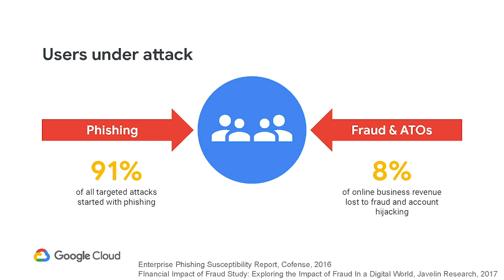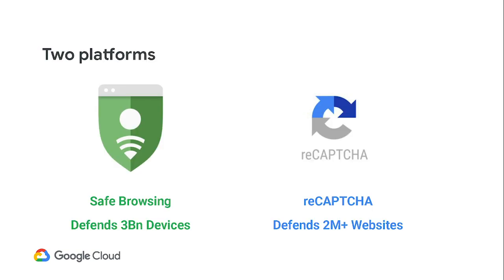Here at Google, we've been protecting our own systems with two spectacular platforms for the last decade. The first is Safe Browsing, which defends over 3 billion devices from phishing and malware. And then the other is reCAPTCHA, which defends more than 2 million websites from fraudulent use by bots. We took these two platforms and leveraged them to create offerings that you all can now use in order to protect your own platforms, users, and devices.